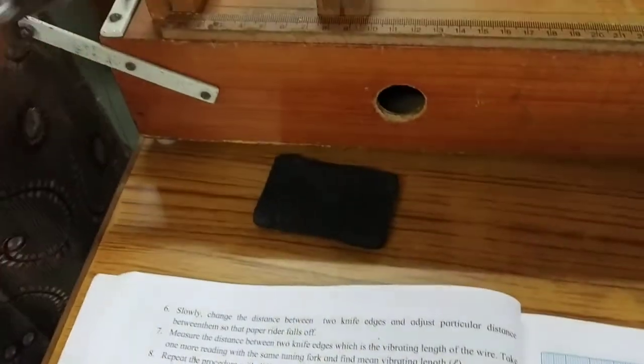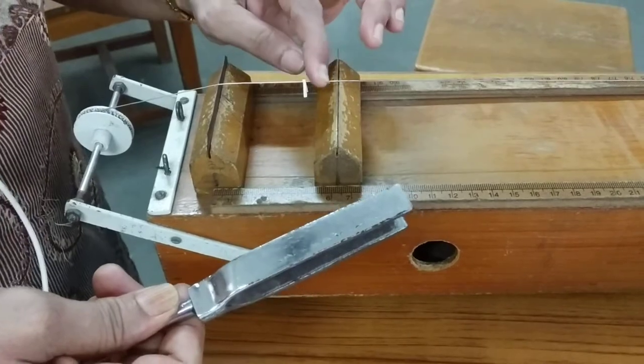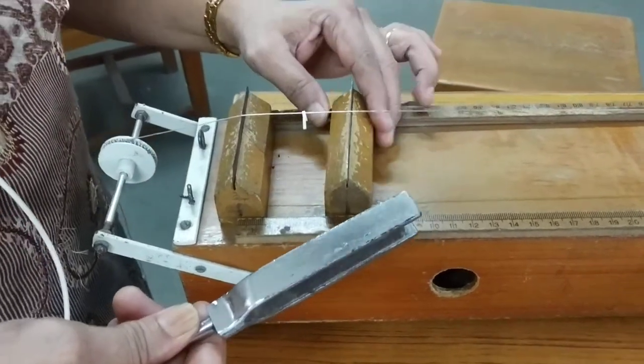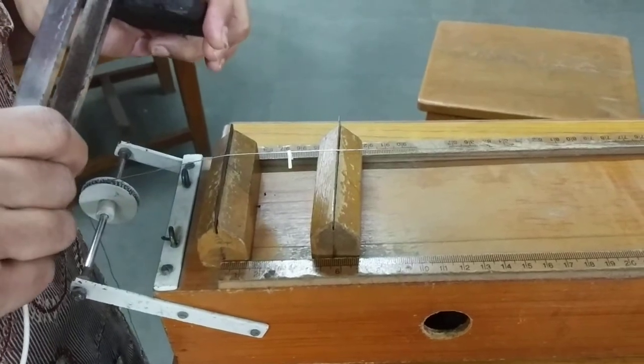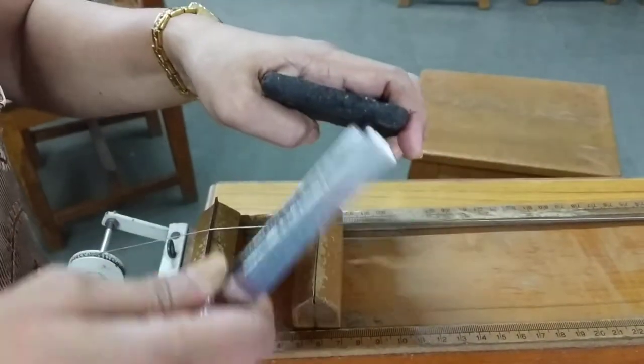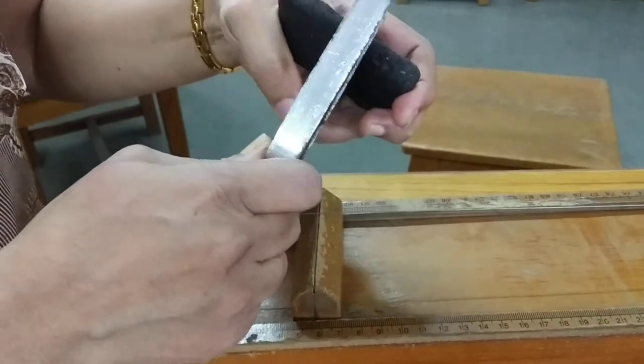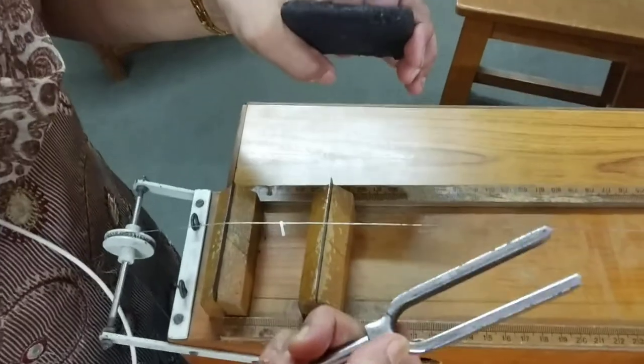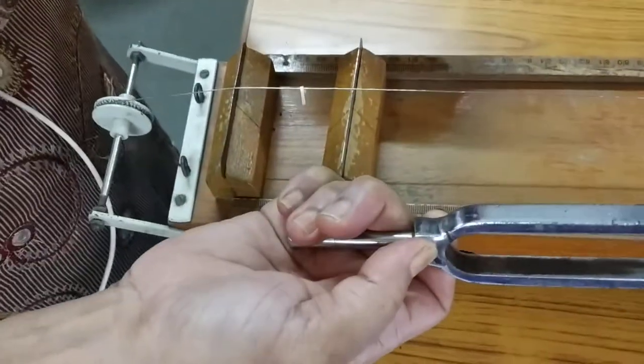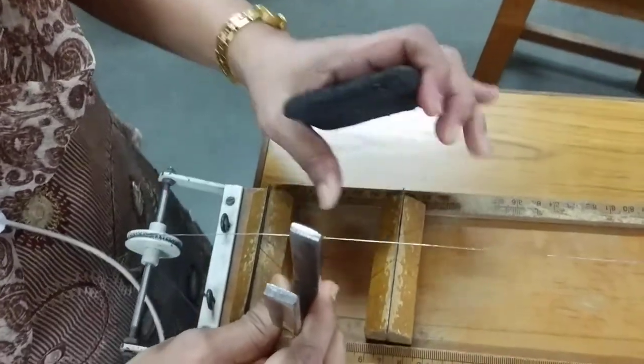We take the highest one and the smallest distance between the knife edges. Now, let us take the reading. You hit the tuning fork on a rubber pad like this. Hit it so that it vibrates in your hand. Hold the tuning fork over here and go on increasing the distance.